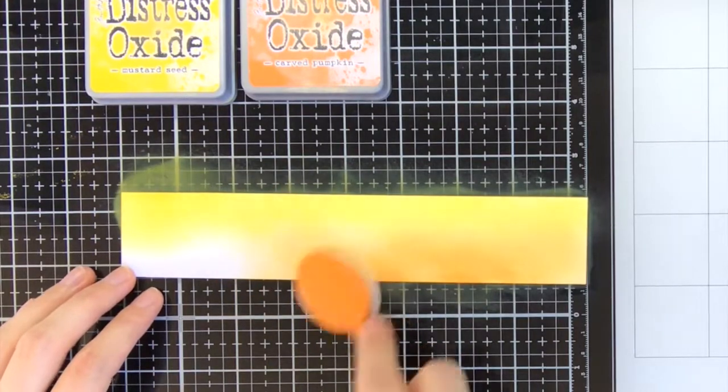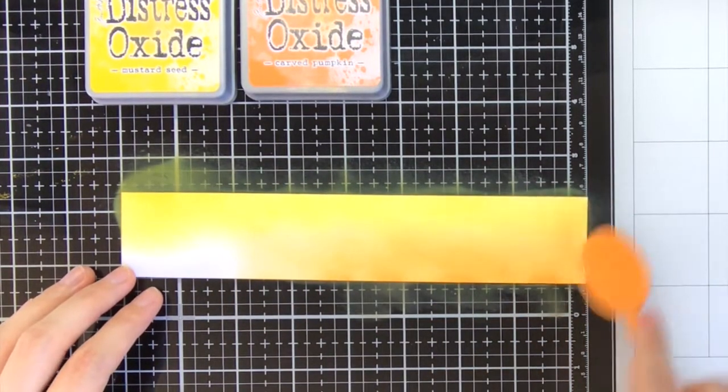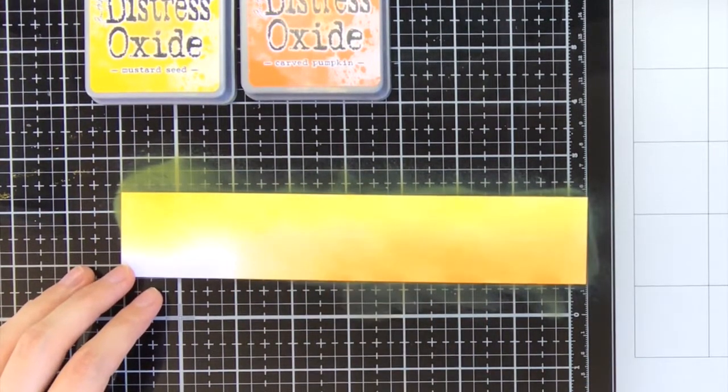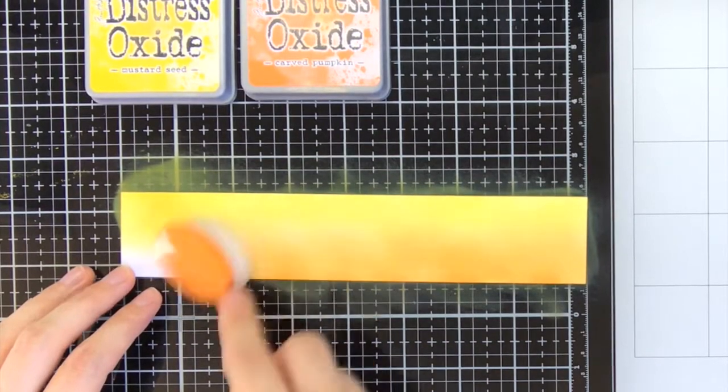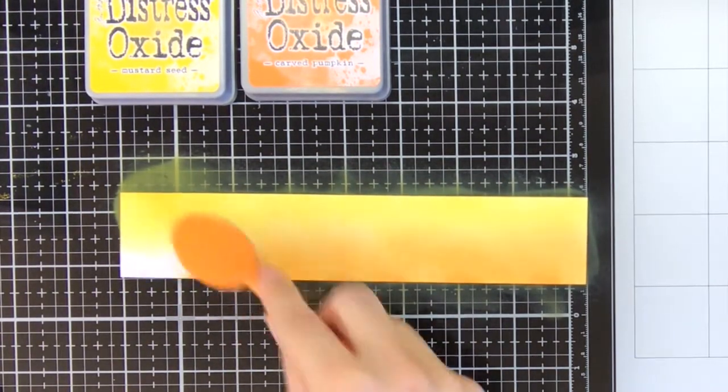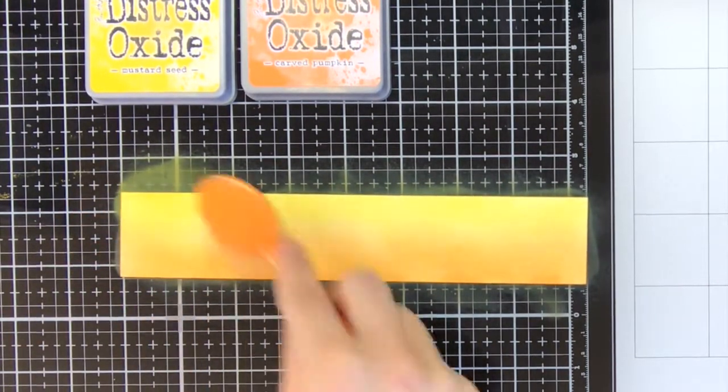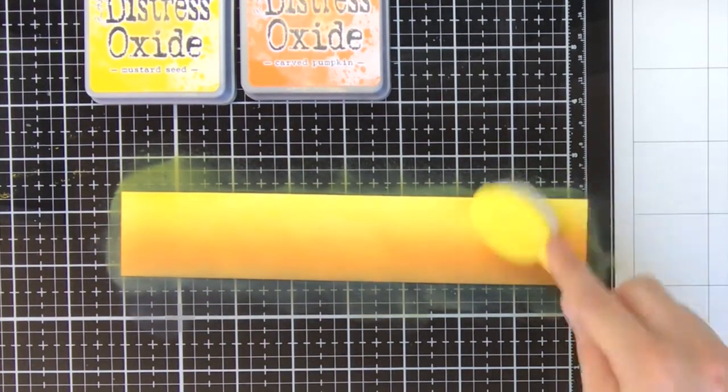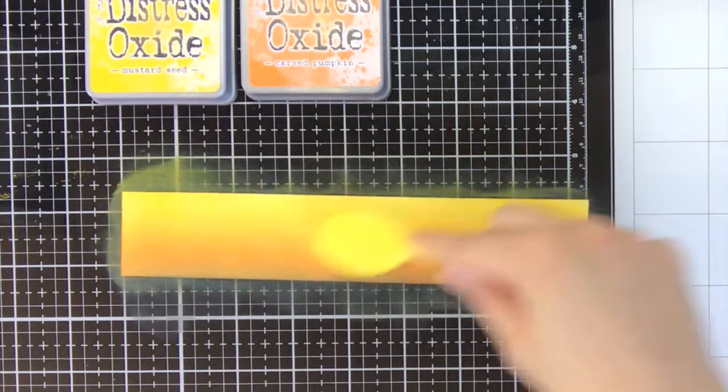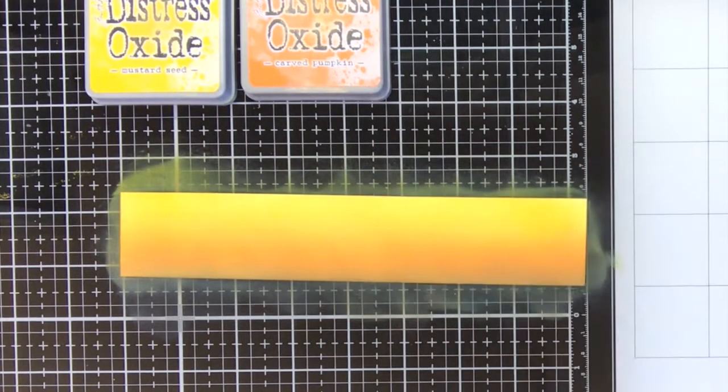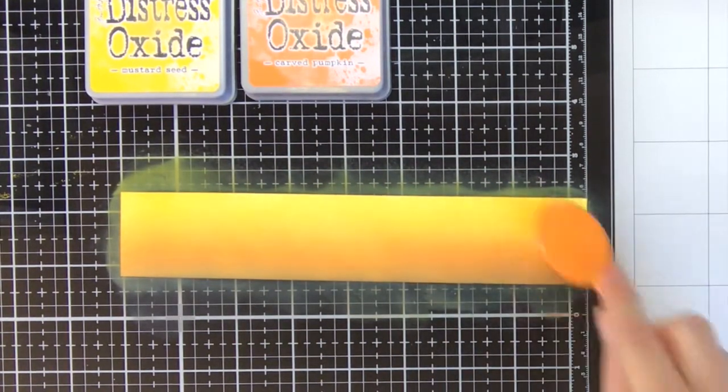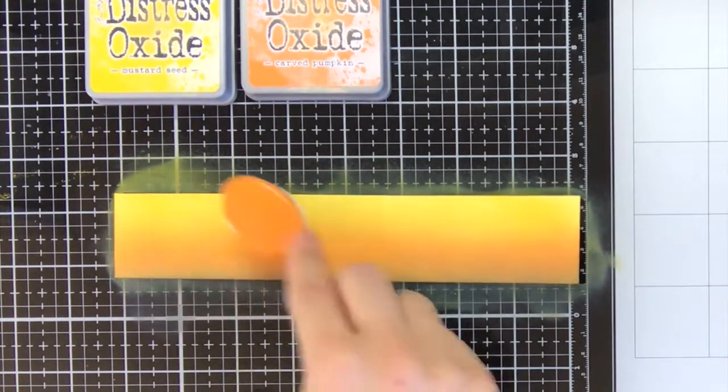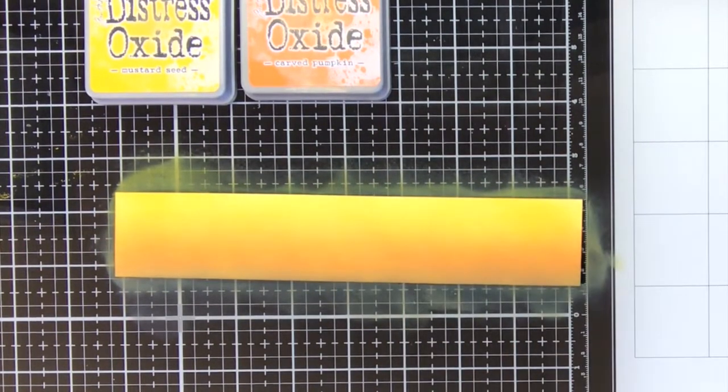Now we can get started on the sentiment. For the sentiment I really wanted to use contrasting colors compared to the background. So the background is completely purple, so I thought it would be good to use the mustard seed and carved pumpkin for the sentiment itself. This will make sure that it really pops from the background. And of course orange is also a Halloween color, and it goes very well with the purple.